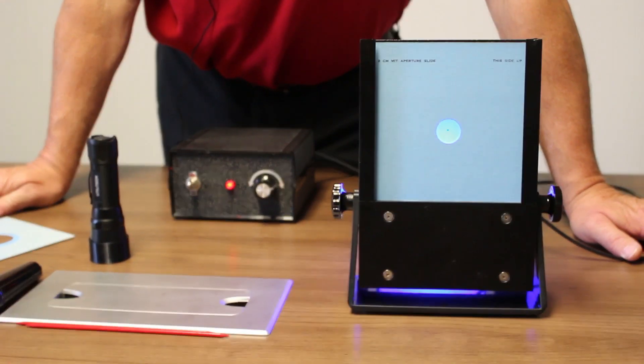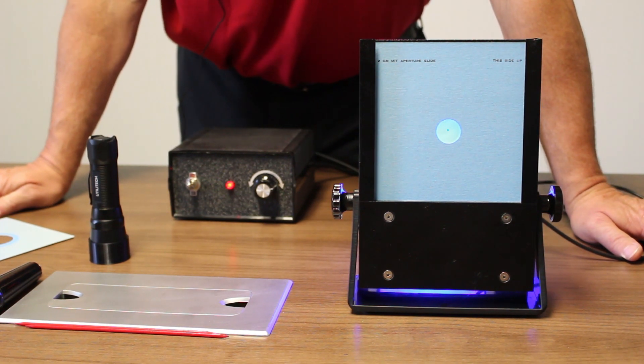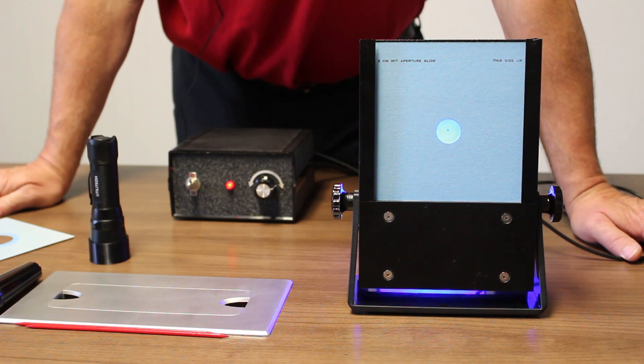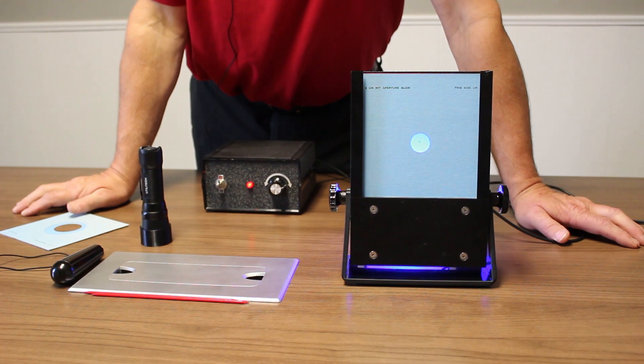If they have eccentric fixation, they'll be looking at the dot with the eccentric point, but the propeller or the Hadinger brush will be spinning around the fovea. Therefore, it will be offset or won't be spinning around that dot. You need to know in what direction the propeller is from the dot and how far away that is.